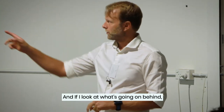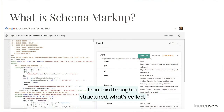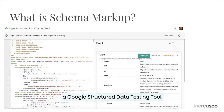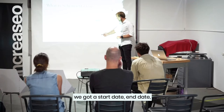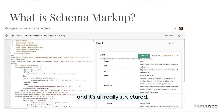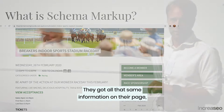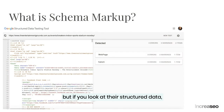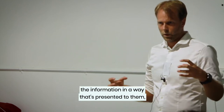If I look at what's going on behind the scenes — this might get a little code-y — I've run this through the Google Structured Data Testing Tool. On the right you can see there's a type 'Event,' an ID which is the URL, a name, a description, a start date, end date, images, etc. All this data that Google's picked up is really structured. But if you go to the Central Coast Entertainment Grounds website, they have all that same information on their page — yet their structured data has nothing.